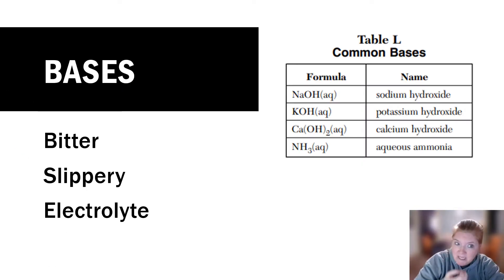And then we have bases. Bases are slippery. They're bitter. They're also electrolytes and conductors. We have strong bases at the top of table L, and they are strong conductors, strong electrolytes, and weak bases at the bottom, and they are weak conductors and weak electrolytes.